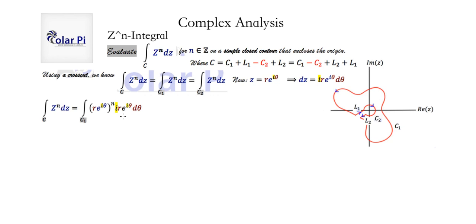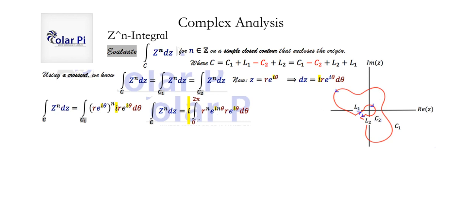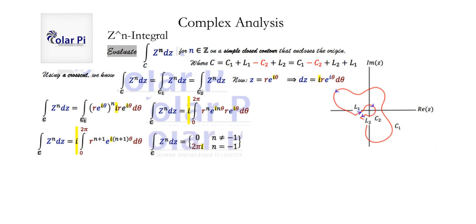Notice that in the integrand we can use exponent rules and write r times e to the i theta all to the n power as r to the n times e to the i n theta. We have r to the n in the integrand and r, so r to the n times r turns into r to the n plus 1. And then e to the i n theta times e to the i theta turns into e to the i times n plus 1 times theta. The general result of what this integral becomes is 0 any time n is not equal to negative 1, and 2 pi i when n is equal to negative 1.